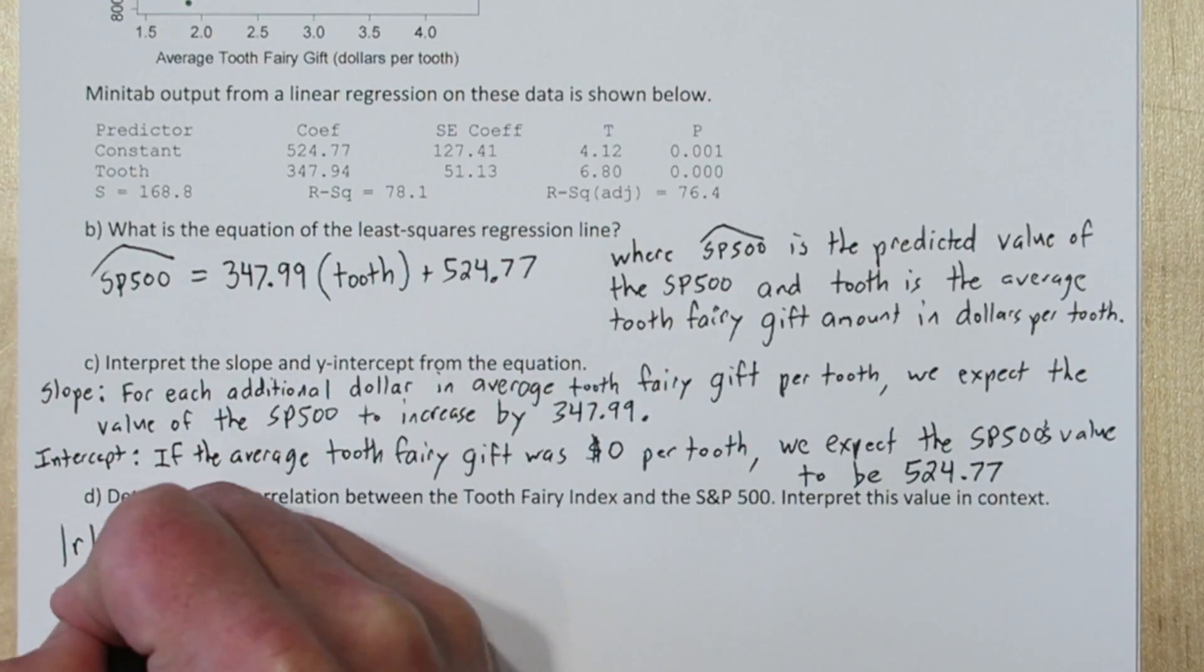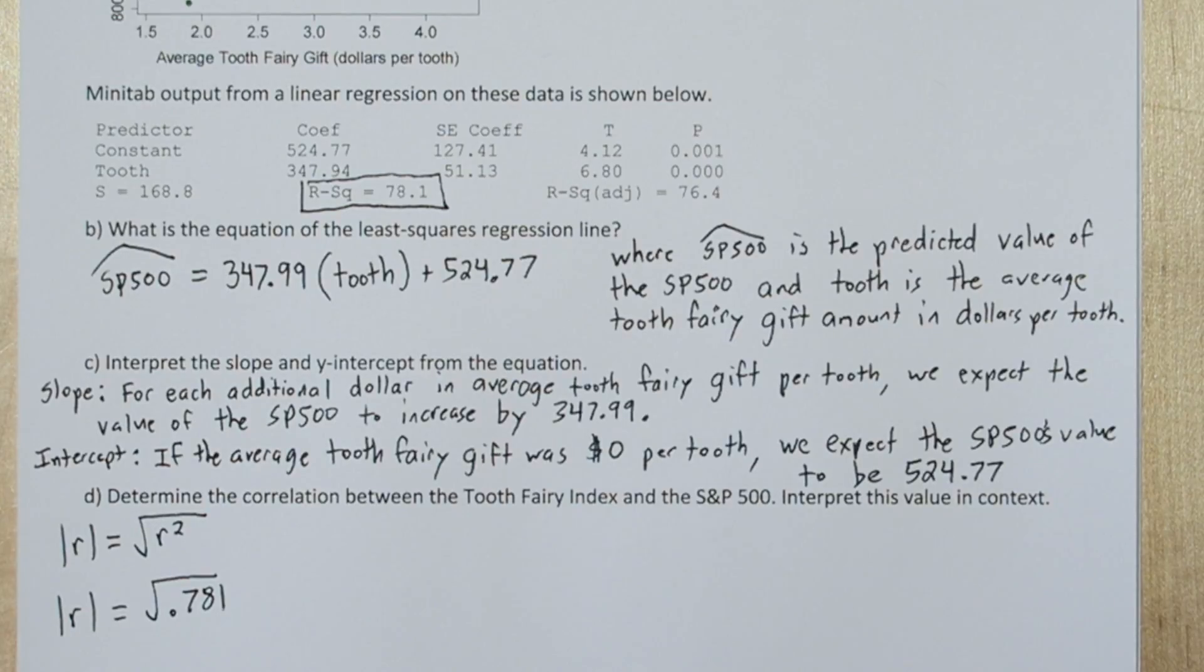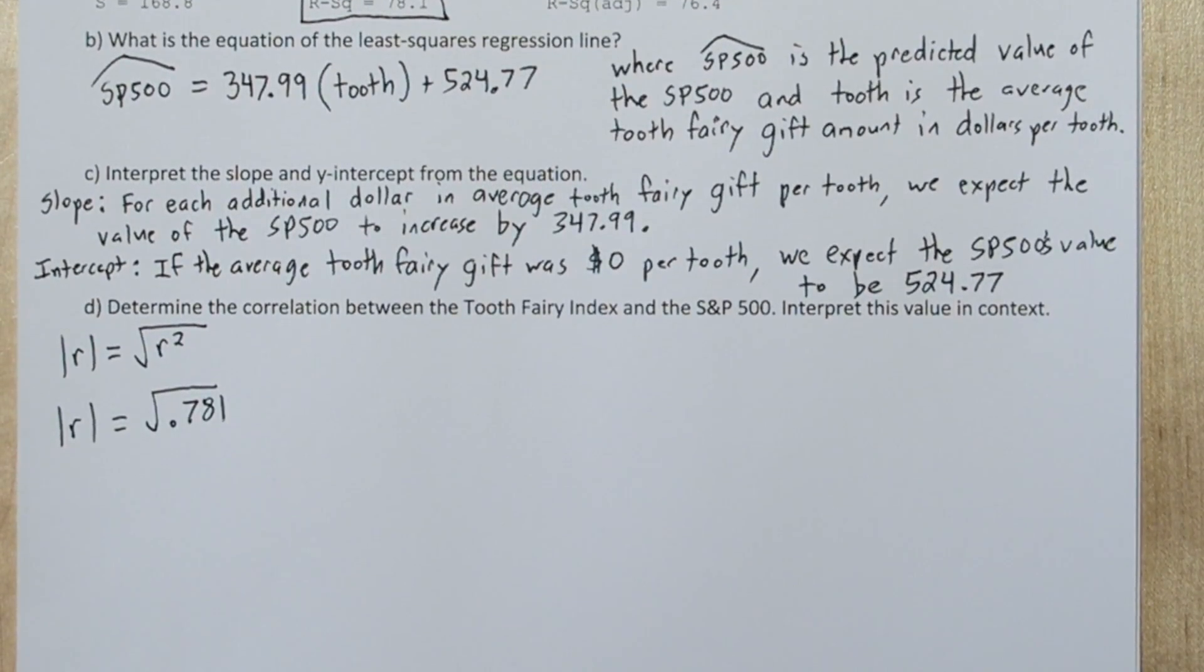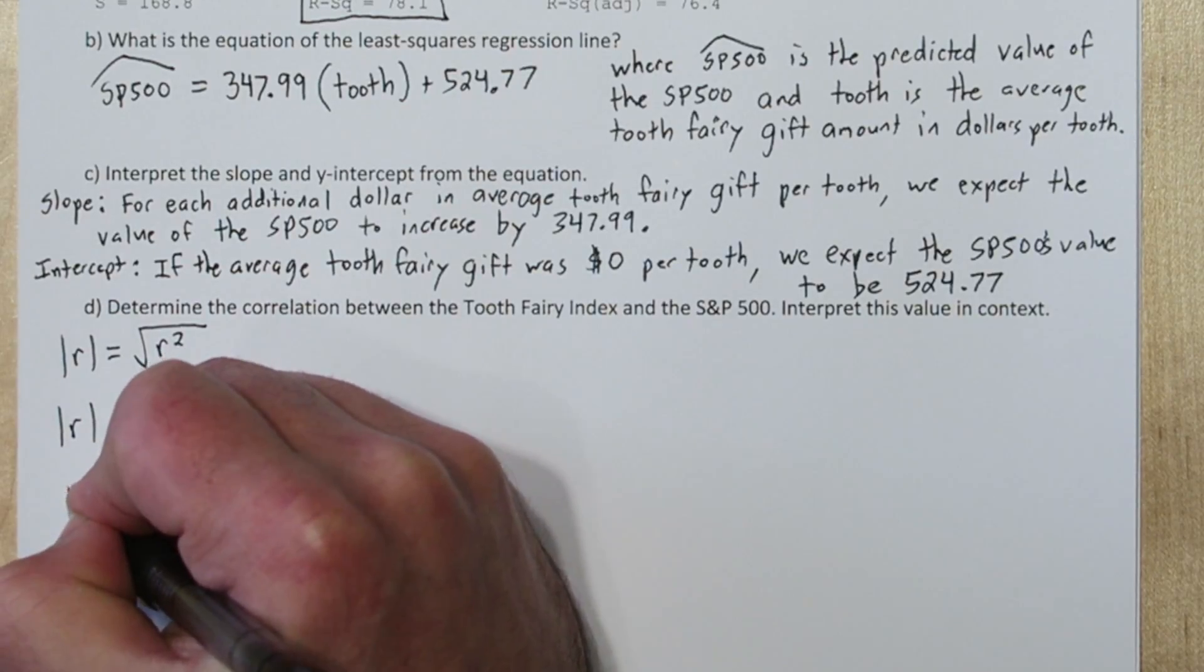Now for correlation, in our output we're given r-squared right here. The problem is when r gets squared, we lose the information about whether it was originally positive or negative. So we have to say the absolute value of r equals the square root of our r-squared value.